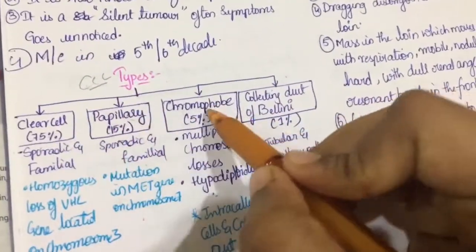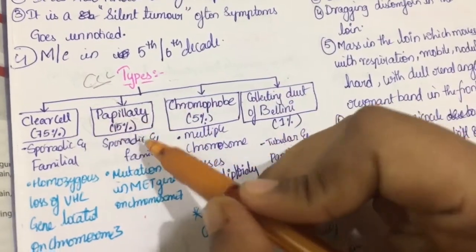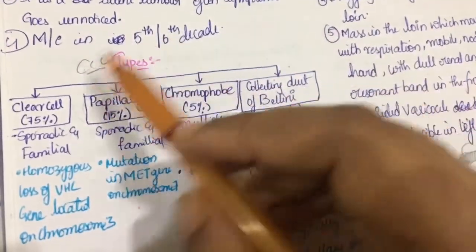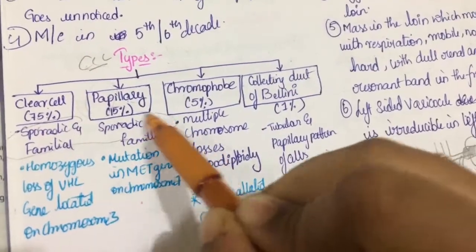3 C's. There is clear cell, chromophobe and collecting duct. And P. Papillary cell carcinoma. And types. Clear cell and papillary. Both are sporadic and familiar.